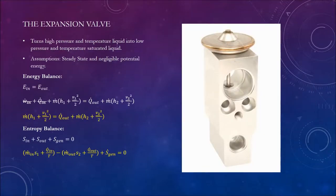The expansion valve turns high pressure and temperature liquid into low pressure and temperature saturated liquid. We assume the process is steady state with negligible potential energy. The energy balance is energy in equals energy out: the rate of internal energy in plus the rate of kinetic energy in equals the rate of heat out plus the rate of internal energy out plus the rate of kinetic energy out.